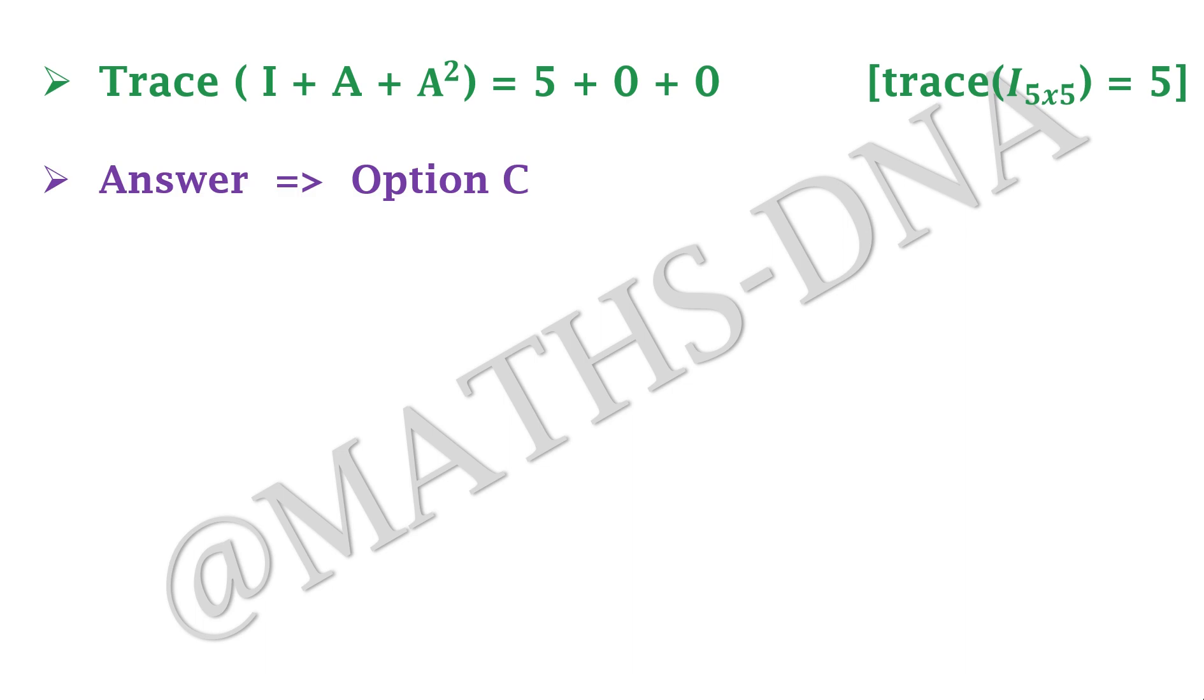So from the two equations of A and of A², we get trace of I + A + A² is equal to 5 + 0 + 0. Because the trace of identity matrix of order 5×5 is 5. So trace is 5 and the correct answer is option C.